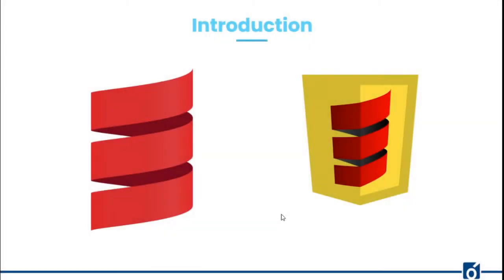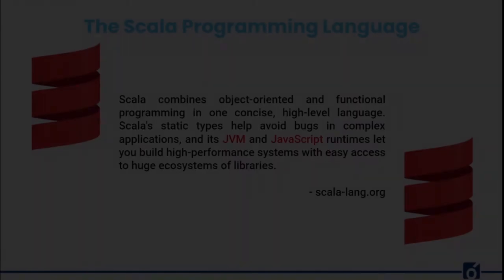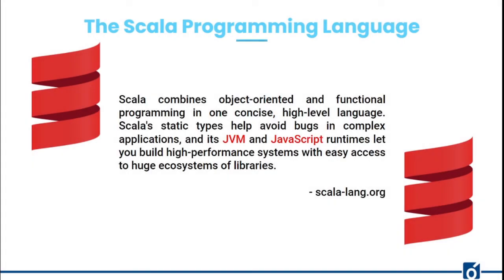Moving towards the introduction to what Scala.js is — you can see two images here, one for Scala and another for Scala.js. Scala combines object-oriented and functional programming in one concise high-level language. Scala's static type system helps avoid bugs in complex applications, and its JVM and JavaScript runtime let you build high-performance systems with easy access to a huge ecosystem of libraries. We know Scala from JVM terms with famous frameworks and libraries like Akka, Spark, Lagom, Play, and many more — all running on JVM.